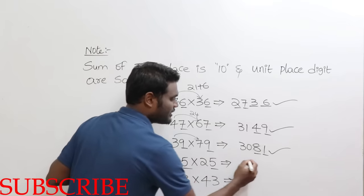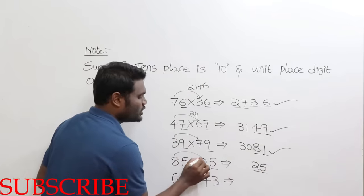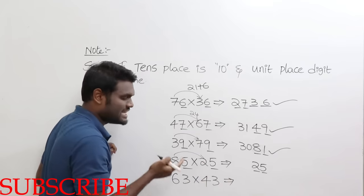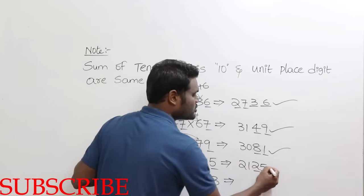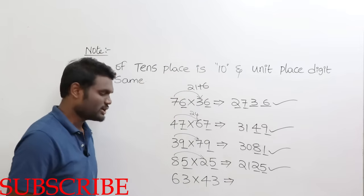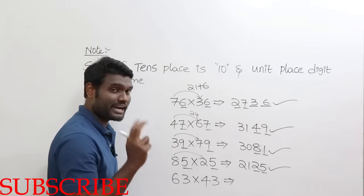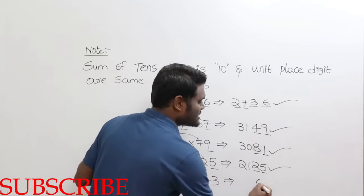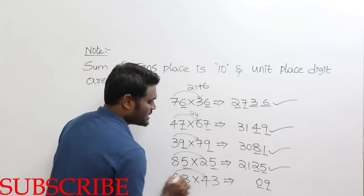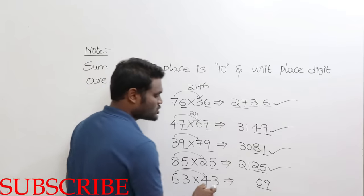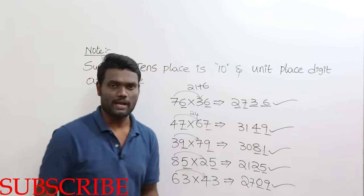5×5 = 25, so the last 2 digits are 25. 8×2 = 16, and 16+5 = 21. So the answer is 2125. For the next one: 3×3 = 9, but write it as 09 for 2 digits. 6×4 = 24, and 24+3 = 27. So the answer is 2709. Isn't it amazing? It's a simple technique.